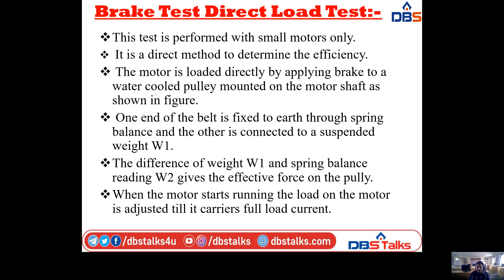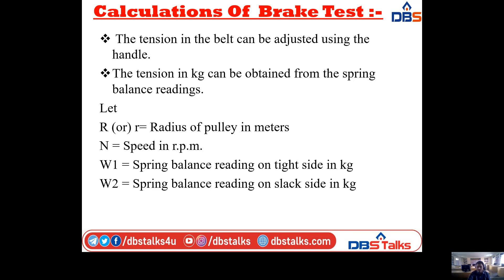The tension in the belt is adjusted using the handle, and the tension in kg is obtained from the spring balance readings — that is W2. W1 is the applied load and W2 is the spring balance reading. The parameters needed are: R (radius of pulley in meters), N (speed in RPM), W1 (spring balance reading on tight side in kg), and W2 (spring balance reading on slack side in kg).